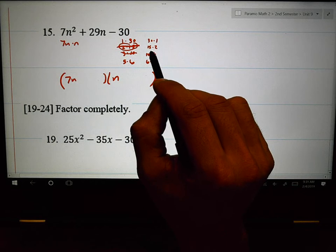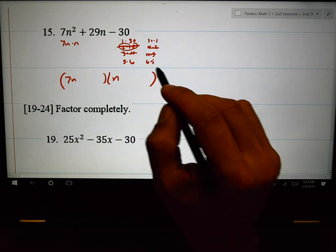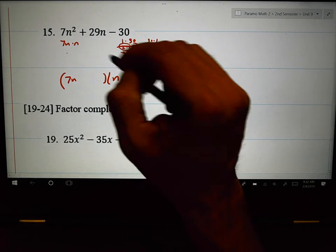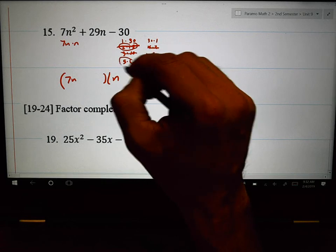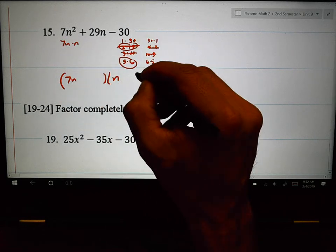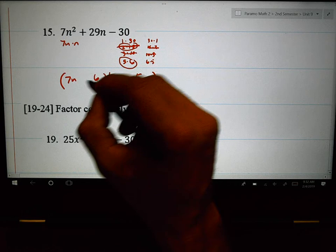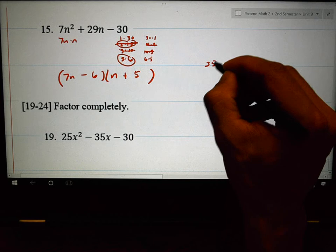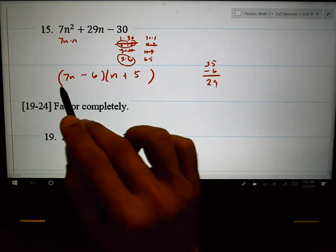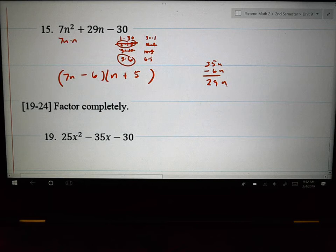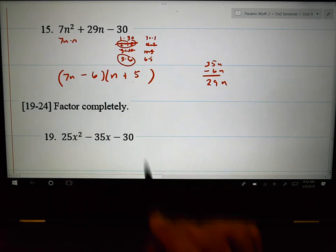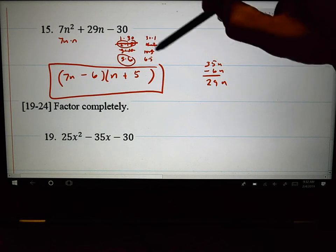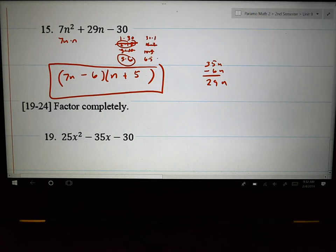35. 105 and 2. That's too big. 6 times 7 is 42. 42 and 5. Doesn't work. 35 and 6. Let's check those. So 35 and 6. If I had the 35 as a positive and the 6 as a negative, 35 minus 6 is 29. That would work. And then this times that would work. Sometimes you're going to have to go through about 5 of them to figure it out. Which is what I did in this case.